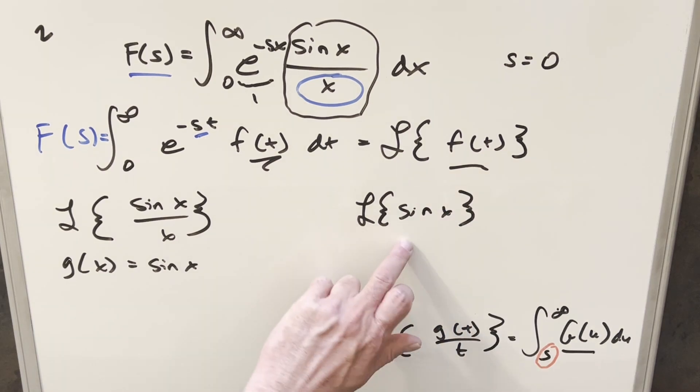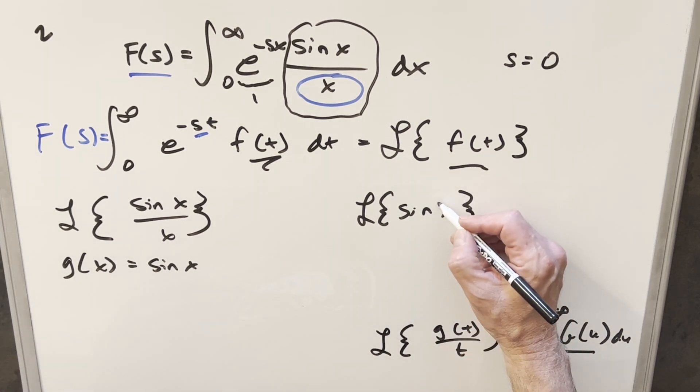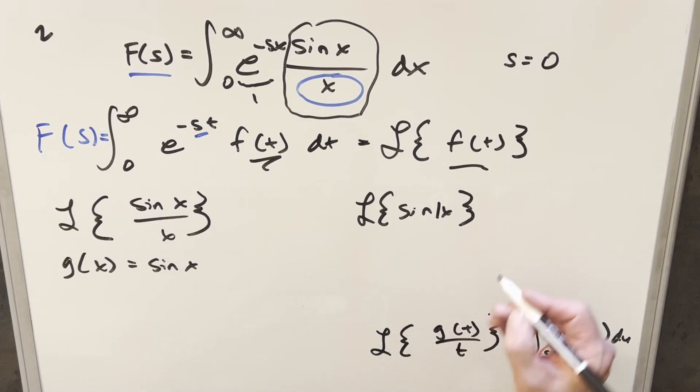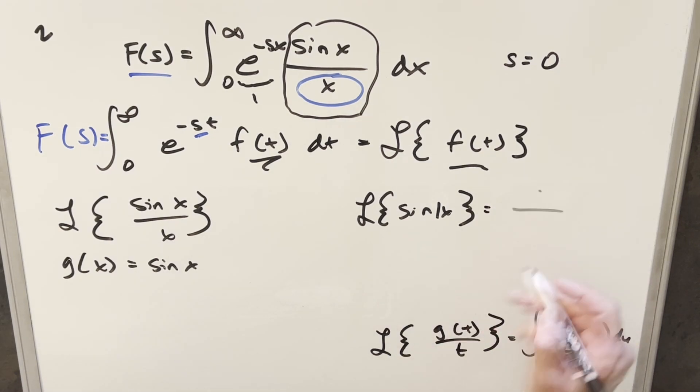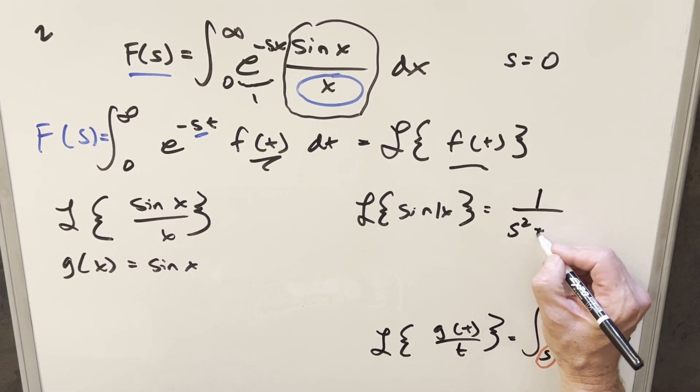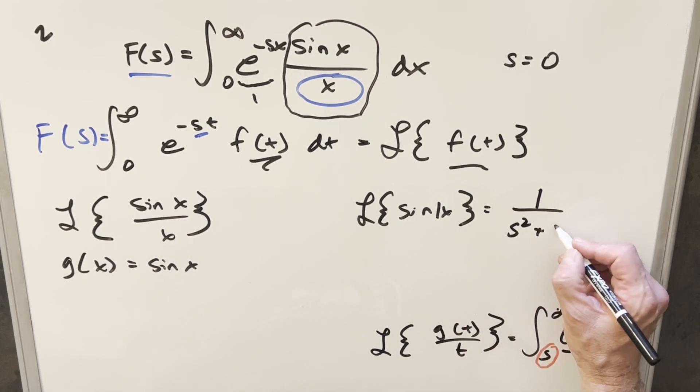But this right here is a well-known formula we can do. We often have like this coefficient on here, so we just have a coefficient of 1 on this. So using the formula for the Laplace transform of sine x, our coefficient, which is just 1 over s squared plus coefficient again squared, but that's just going to be a 1.